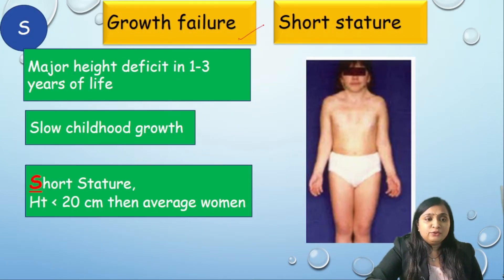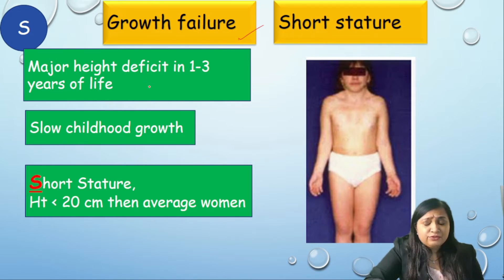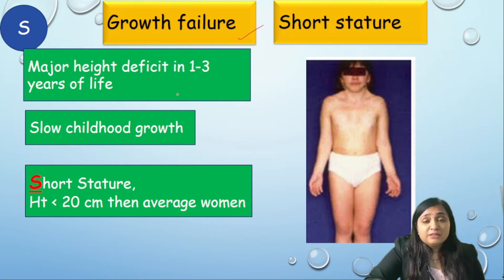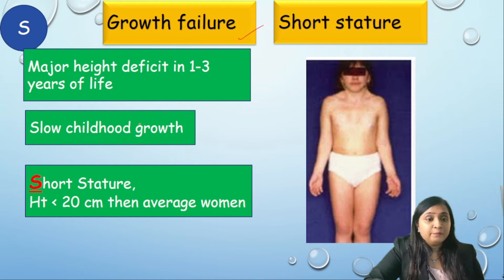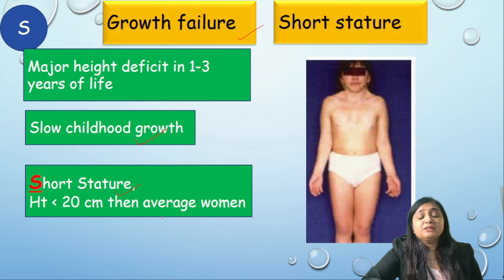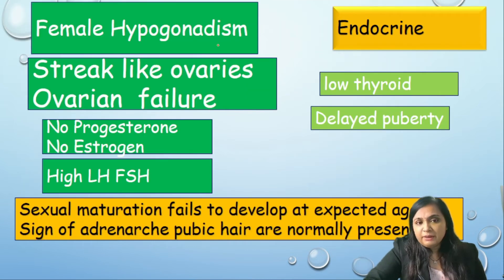The first S is short stature — there is a failure of growth with a major height deficit in the first three years of life. If we diagnose this early, we can start intervention early and results could be very good. There is slow childhood growth; the average height deficit is less than 20 centimeters.